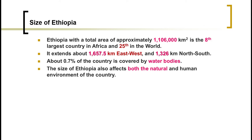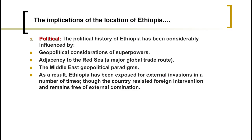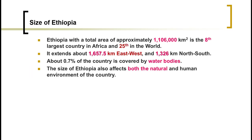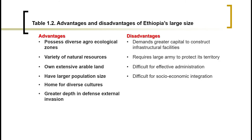The size of Ethiopia is approximately 1,106,000 square kilometers, making it the 10th largest country in Africa and the 25th largest in the world. Around 0.7 percent of the country is covered by water. This large size significantly affects both the natural and human environments of the country.